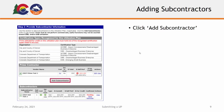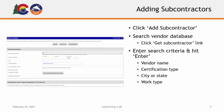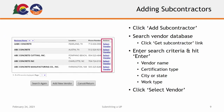Once you've verified the prime contractor's information is correct, you will proceed to adding subcontractors to the utilization plan. To add a subcontractor, click the Add Subcontractor button and begin adding subcontractor information. To search the vendor database, click the Get Subcontractor link at the top of the page. Enter your desired search criteria, such as the vendor name, certification type, city or state, or work type, and hit Enter. When you've located your desired vendor, select the Select Vendor link to the right of their information to add them to your utilization plan.